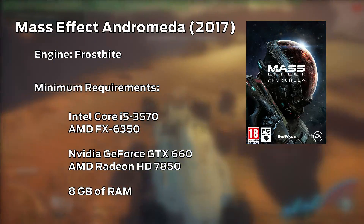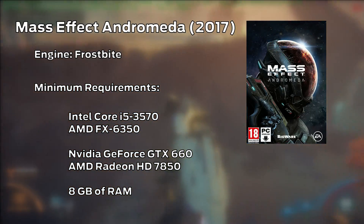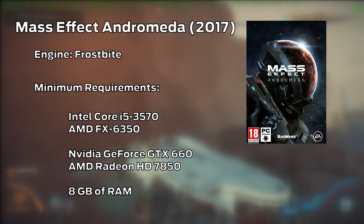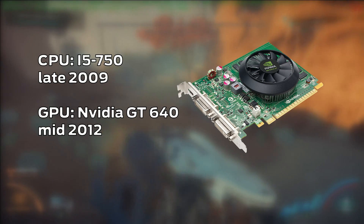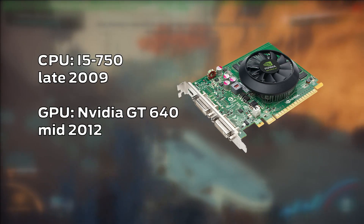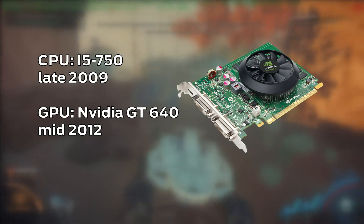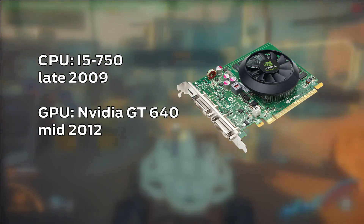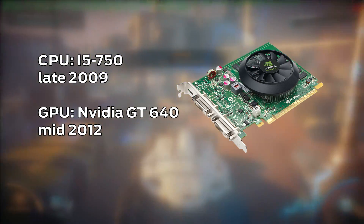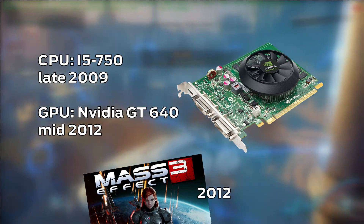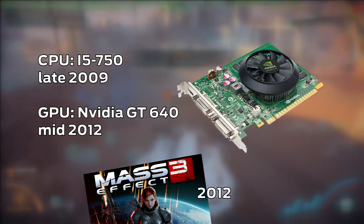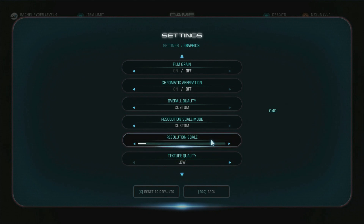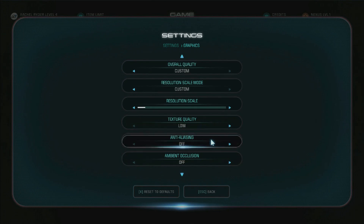The minimum requirements mention an i5-3570 and an NVIDIA GTX 660. Which is why I am going to try this on a 2009 i5-750 and a 2012 GT 640, which should both be inferior to the minimum components. You thought I was joking about a computer that is as old as Mass Effect 3? As usual I am going to start with a resolution of 720, all settings to the lowest and the custom preset.